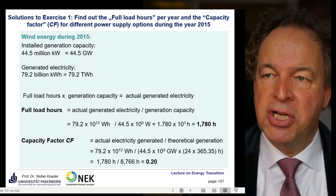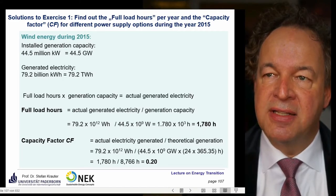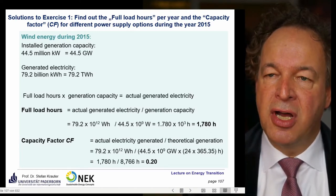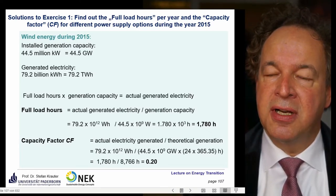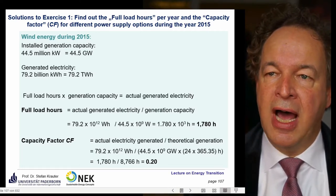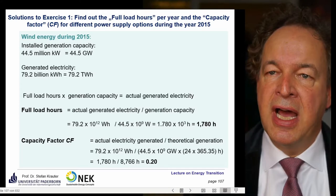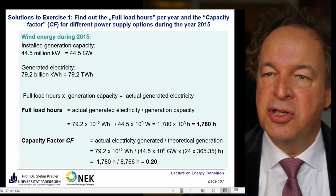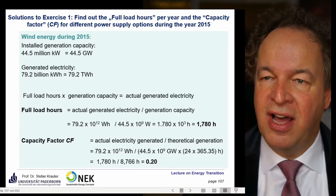So much less — four times less than the one for biomass energy. This depends on the site. Germany is not a very good wind country. If you go to Scotland or Ireland, the wind is more constant and you will find higher capacity factors in the vicinity of 0.4 up to 0.5.